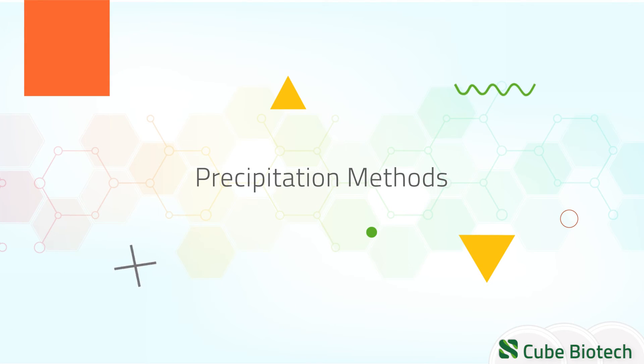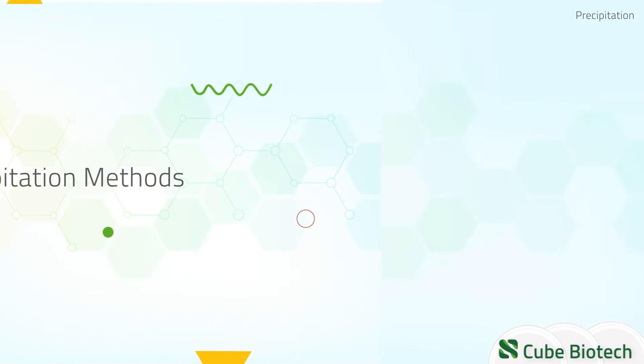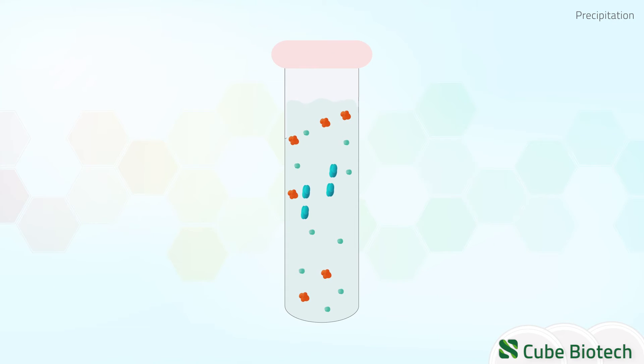Precipitation methods. These techniques separate proteins through their solubility. Their aim is to change the conditions of a solution in which the proteins are dissolved to such an extent that it causes the proteins to precipitate. One example of these techniques is salting out.